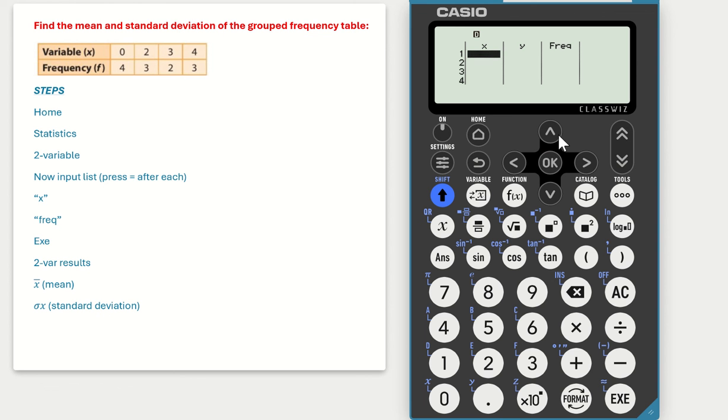For the top of our frequency table, we're inputting the X, 0 and you must press equals after each input, so 2 equals, 3 equals, 4 equals.